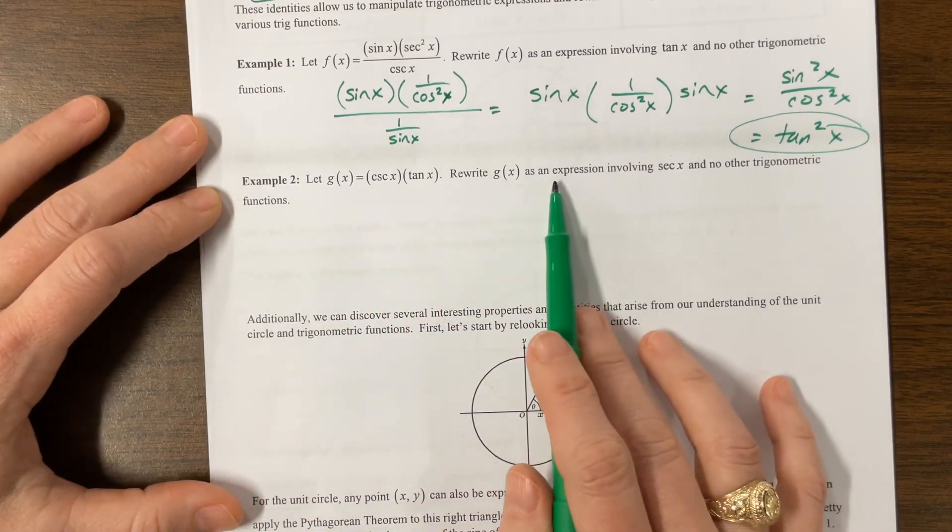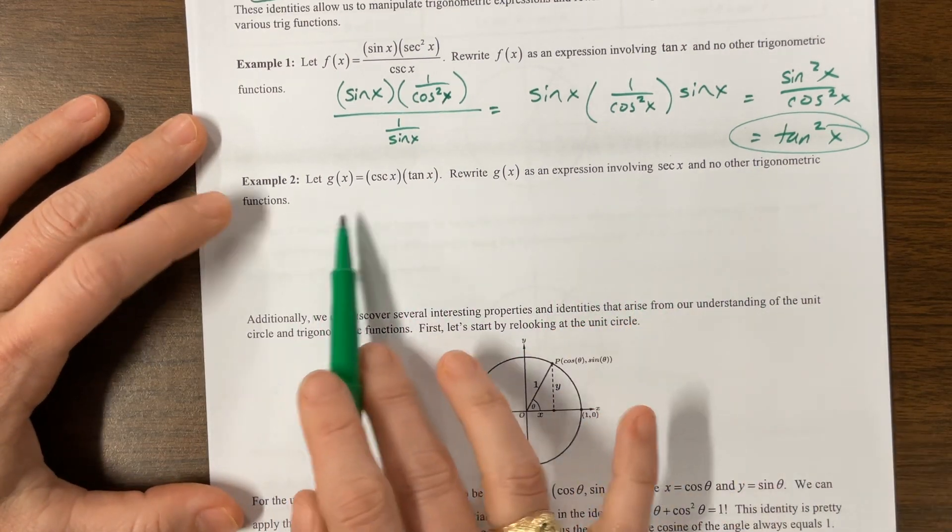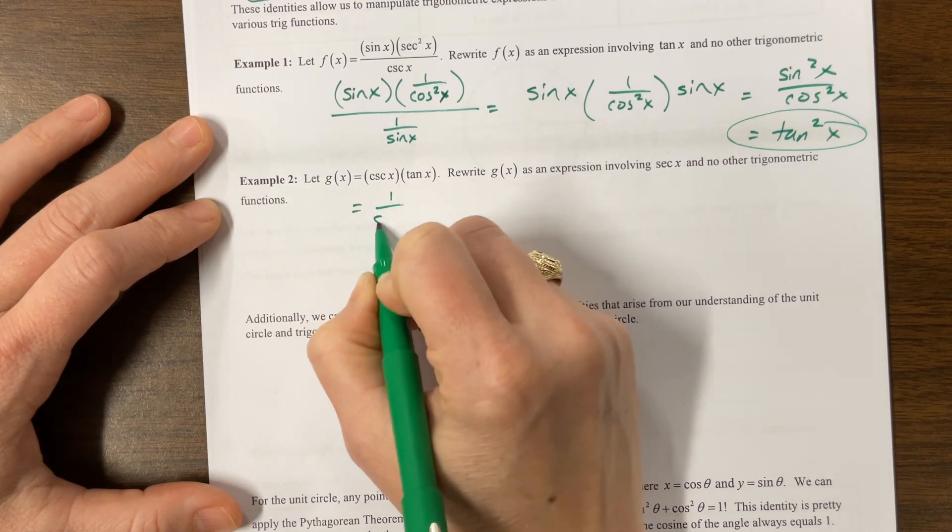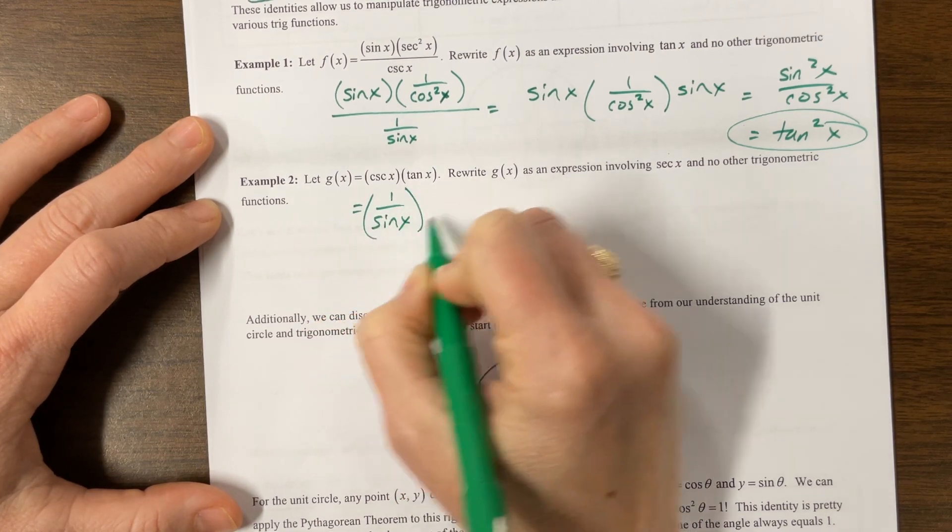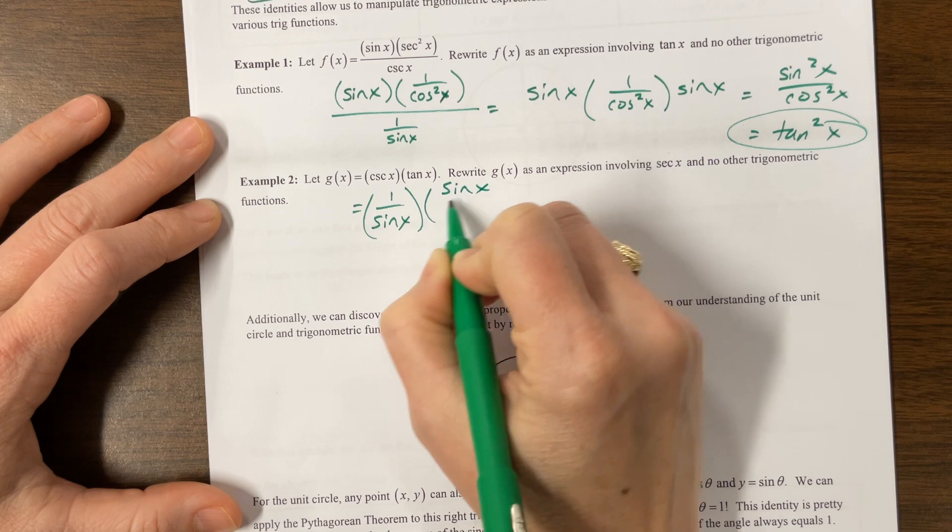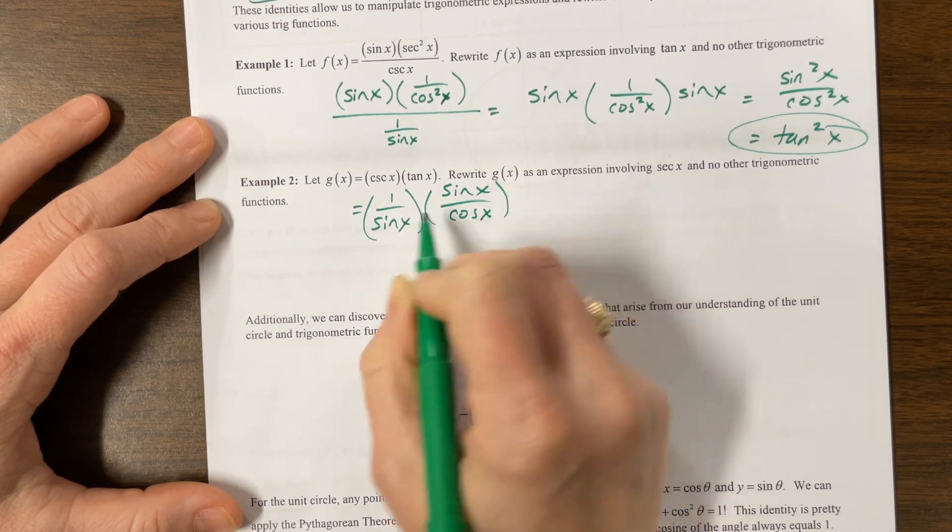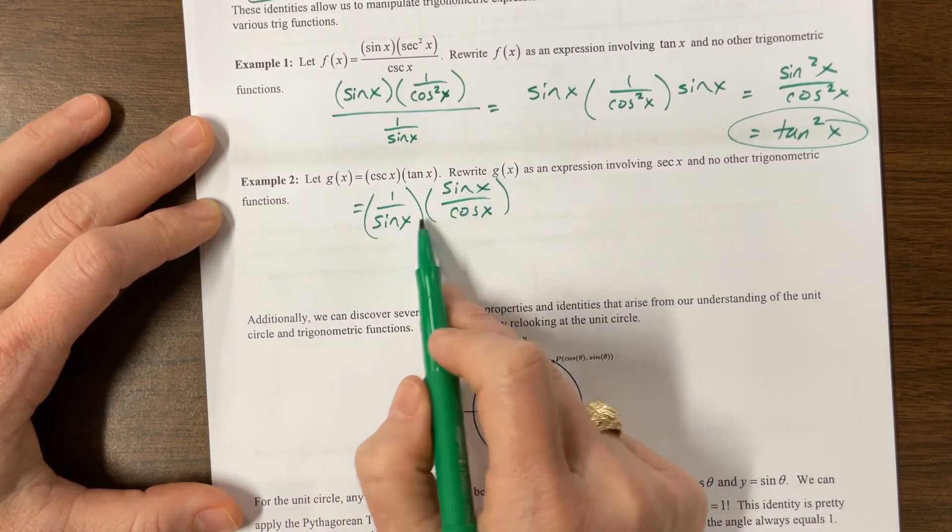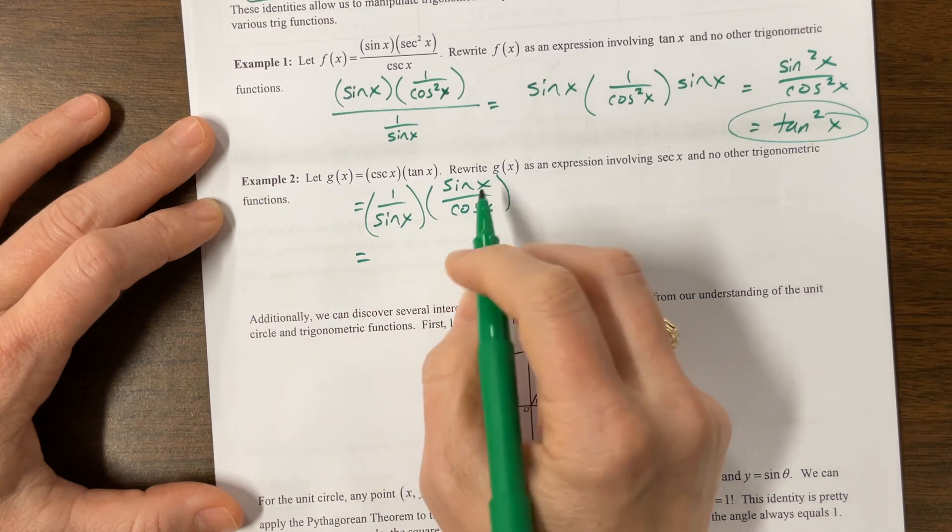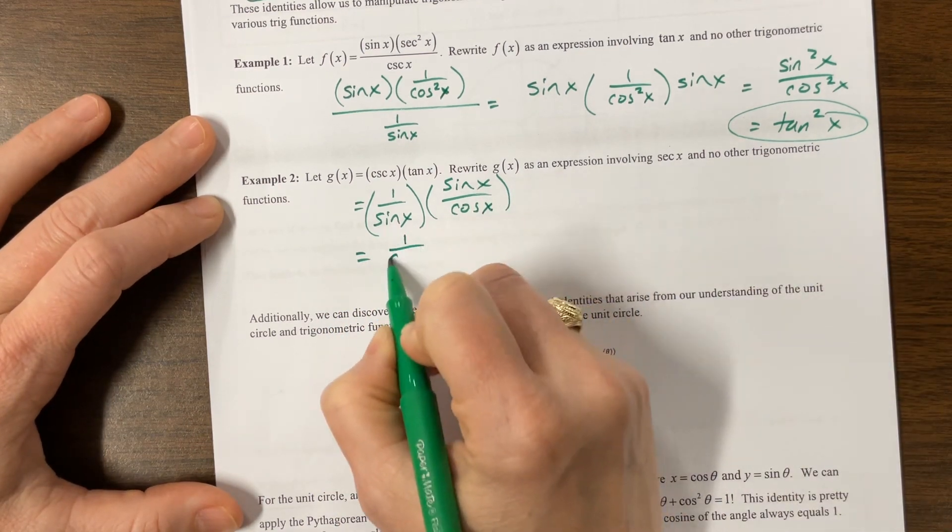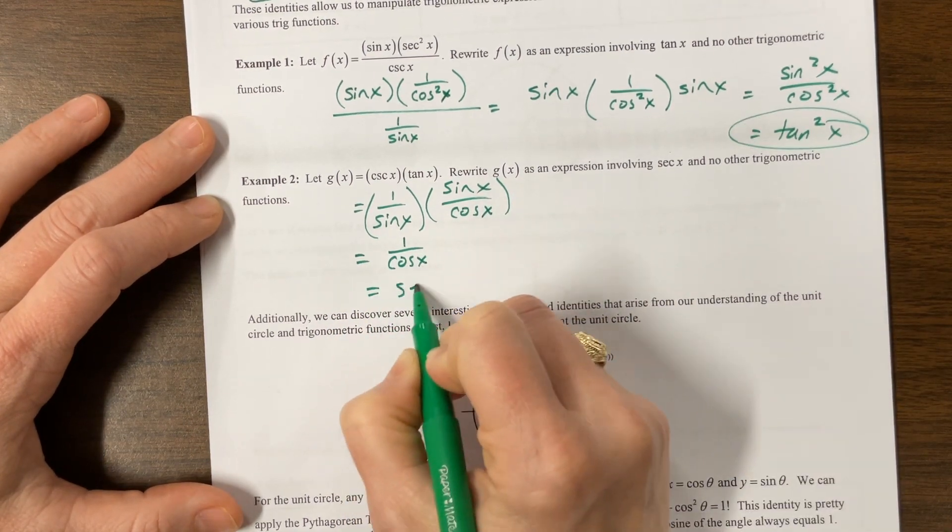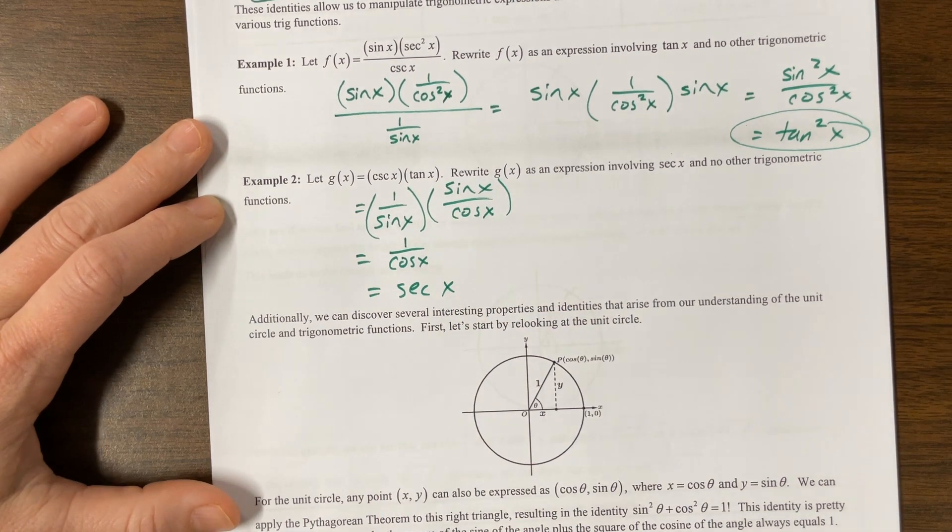Okay, so the next one rewrite it as an expression involving secant and no other functions. So I see that this is equal to one over sine of x times tangent is sine of x over cosine of x. The sine and the sine, they'll cancel out. So sine divided by sine is one. So this becomes one over cosine of x, which is equal to secant. And so that's just secant x and we're done.